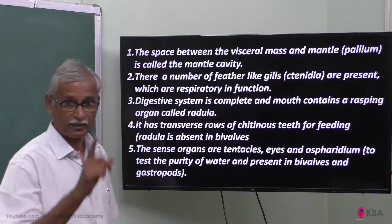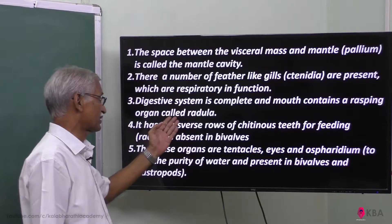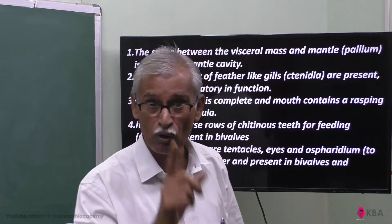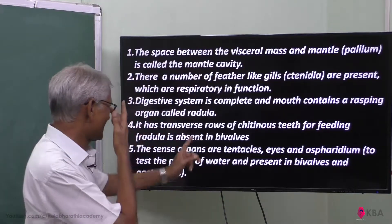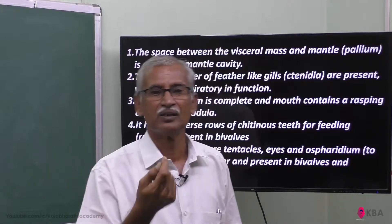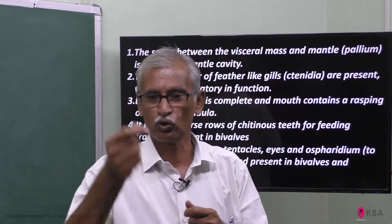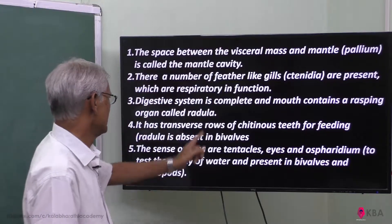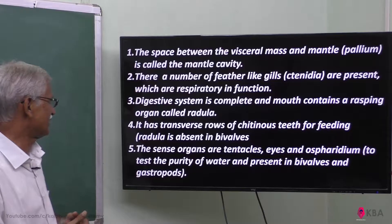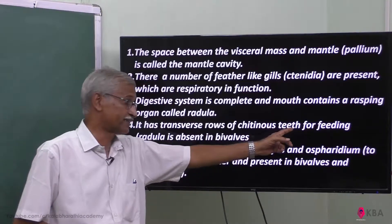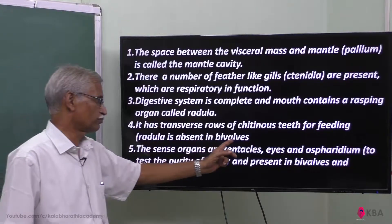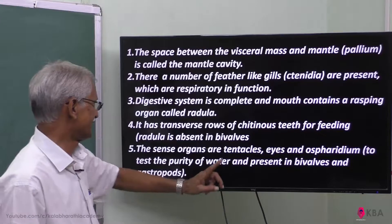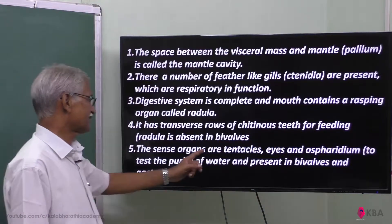The digestive system is complete — it has both a mouth and an anus. There is a rasping organ called the radula. The radula is a rasping structure located in the mouth, with transverse rows of chitinous teeth for feeding. The radula is absent in bivalves.